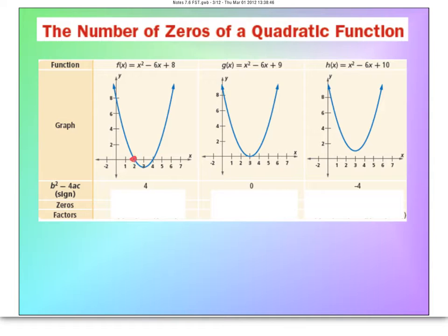For this first one, we see at two and four are the actual zeros. So I'm going to write that down here under the zeros: two and four.